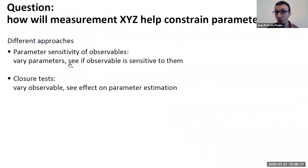Now closure tests really allow you to do the opposite. You really can vary the observable, you can vary the uncertainty on the observable, and you can really see the effect on the parameters. So I would make the case that both the theoretical and experimental community can benefit from this.